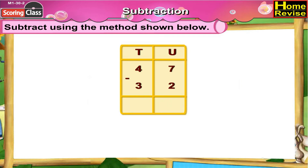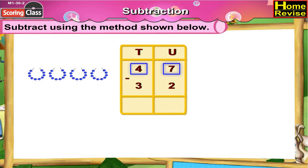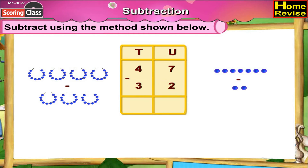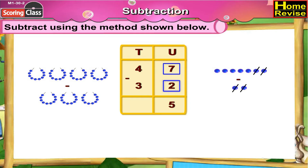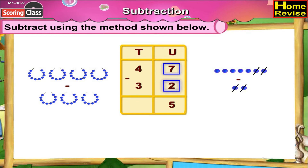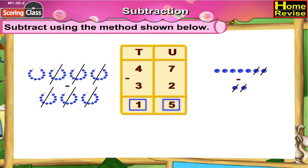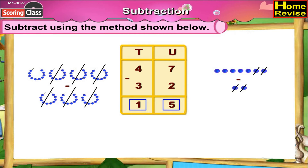47 minus 32. If you arrange them under tens and units column it is 4 tens 7 units minus 3 tens 2 units. Now units column: 7 units minus 2 units is 5 units. 4 tens minus 3 tens is 1 ten. So it is 1 ten 5 units, which means 47 minus 32 is 15.